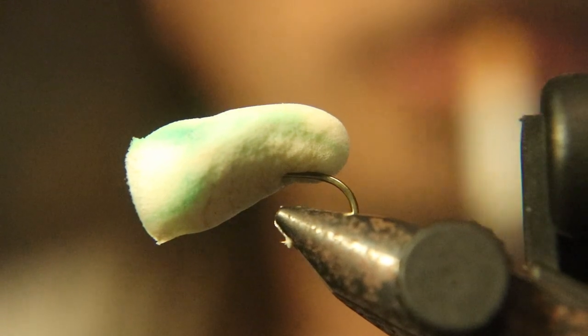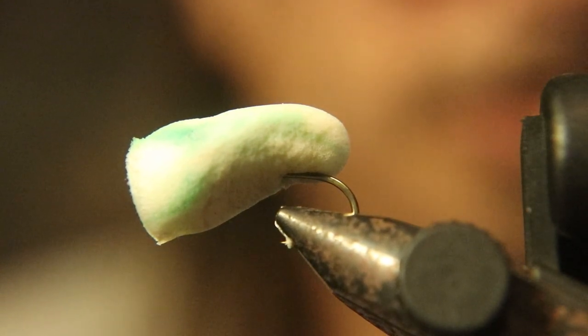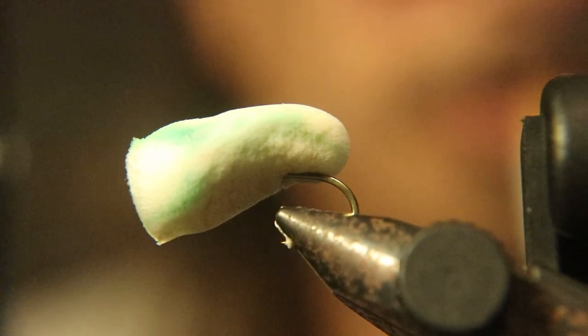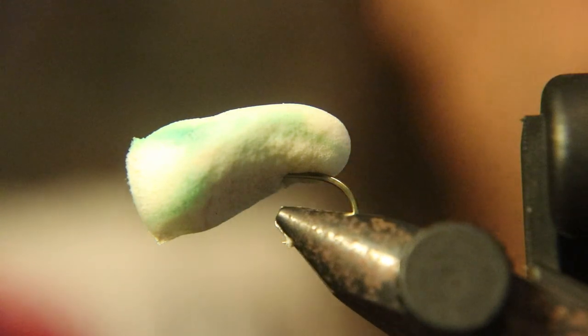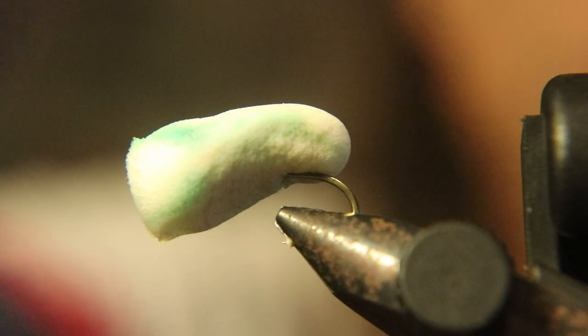Torch the needle up, very careful you don't burn yourself. I use my forceps I use to take hooks out of the fish's mouth, put the needle in there, heat it up, and shove it through the side to make a hole.